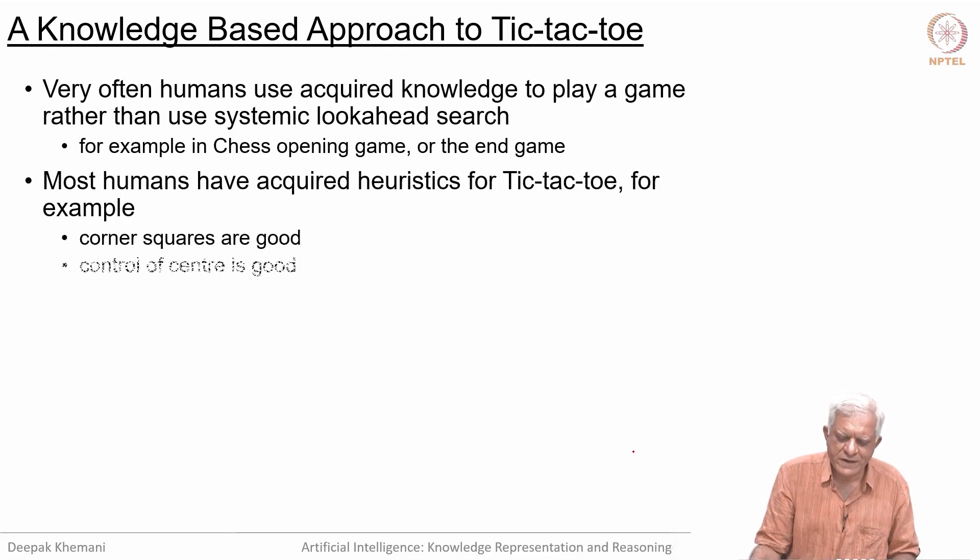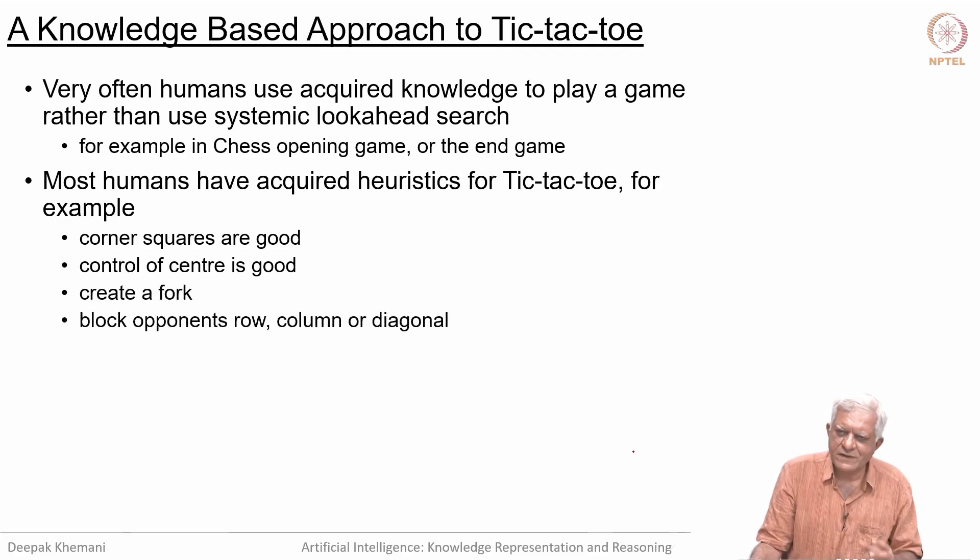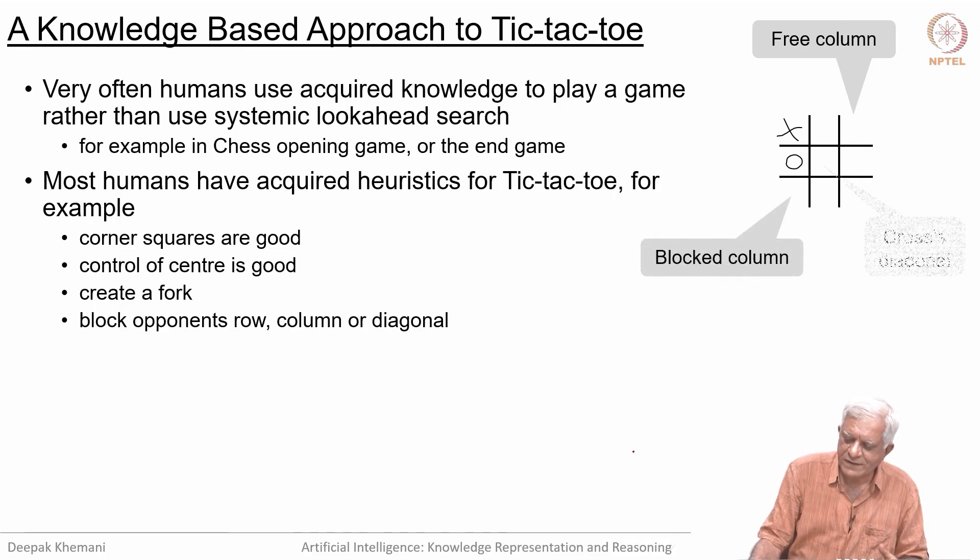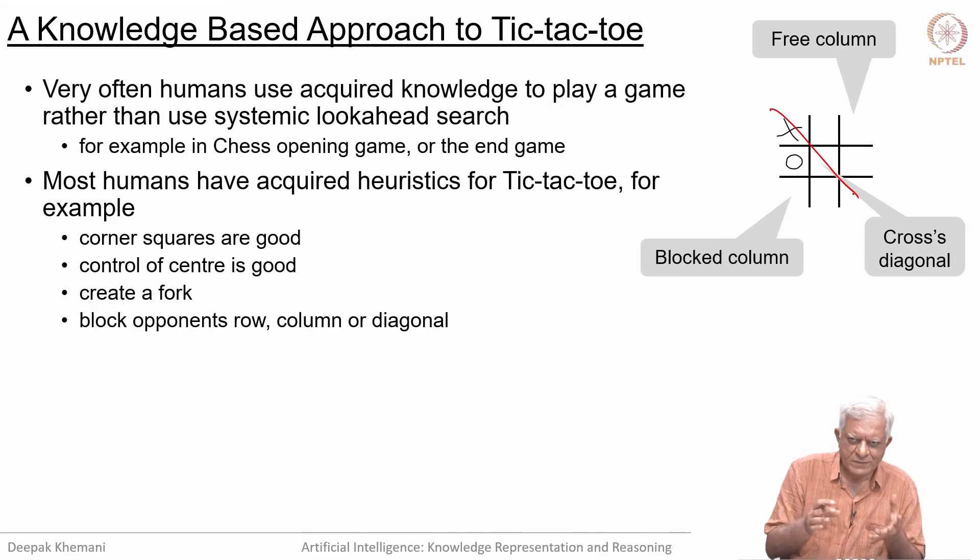Most humans have acquired heuristics for the tic-tac-toe game or the cross and noughts game. You have certain ideas like corner squares are good, control of center is good, or you can create a fork so that the opponent can only close one row—there is a strategy to block opponent's row or column or diagonal. These are the kind of features you would use when talking about heuristics. There is a free column, there is a blocked column, there is a diagonal for the cross, for example. You can write a program to play tic-tac-toe using a set of rules, and I would encourage you to write this set of rules.